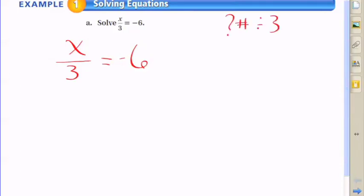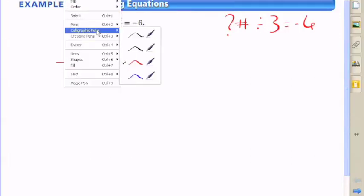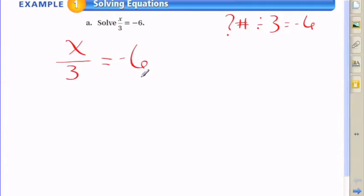So being as we're looking at division here, x divided by 3, one way to solve this equation, or in other words to determine the value for x, would be to multiply both sides of the equation by the coefficient of 3, with 3 being the coefficient here, x being divided by 3.